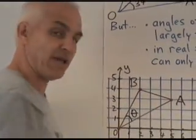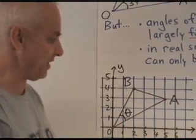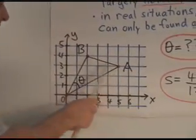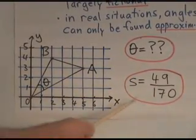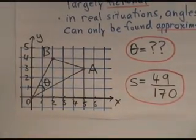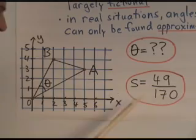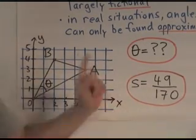The spread, however, as you hopefully know by having watched these videos, is easily obtained by the cross law, since we can compute these quadrances. It takes about 10 minutes to figure out that the spread is 49 over 170. Exactly, precisely.